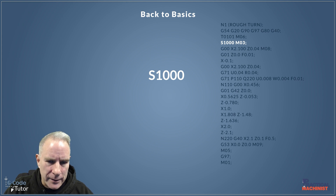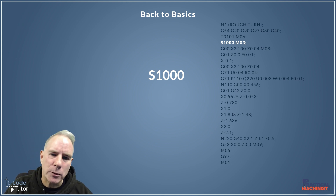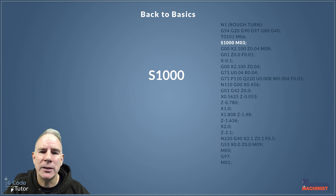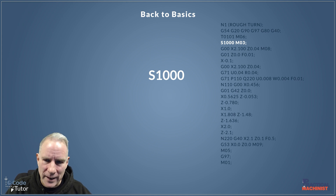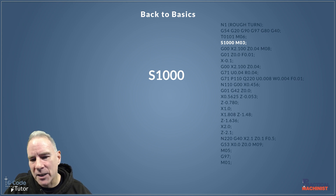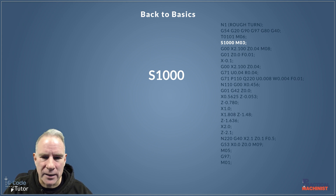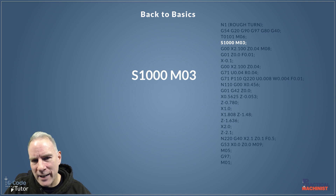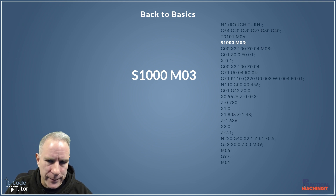Next up is S — spindle speed. We control our spindle speed by giving it an S value. By defining S1000, our spindle is going to start up in a clockwise direction because it's followed by M03.